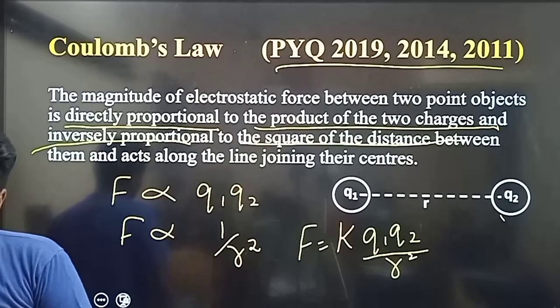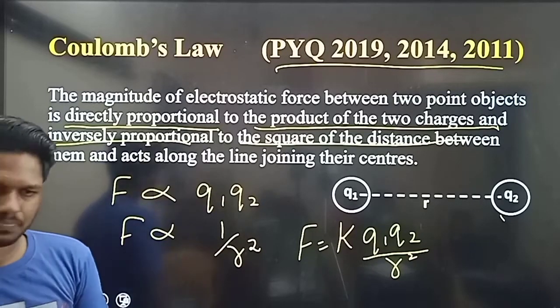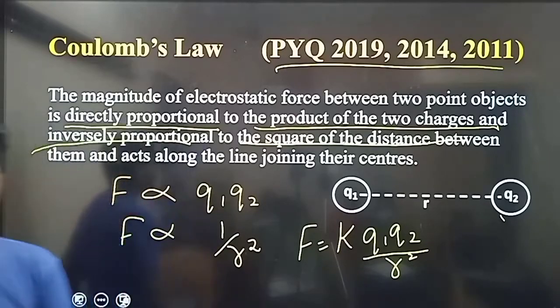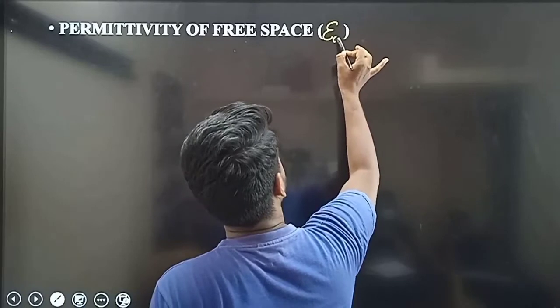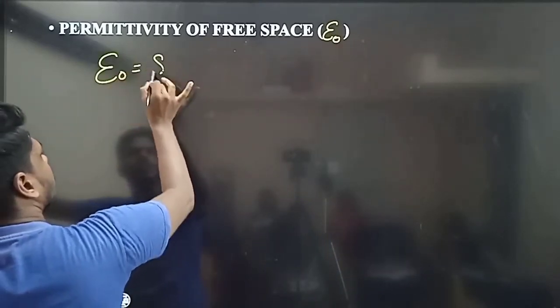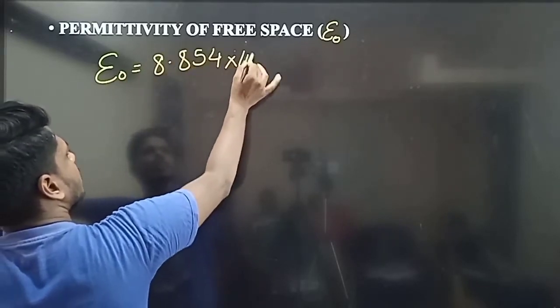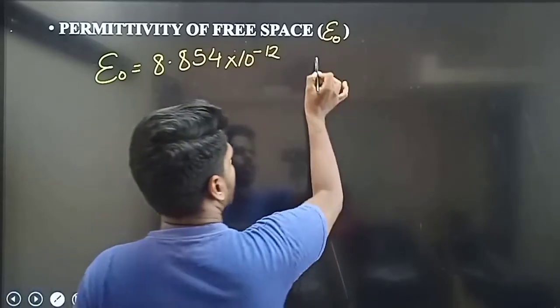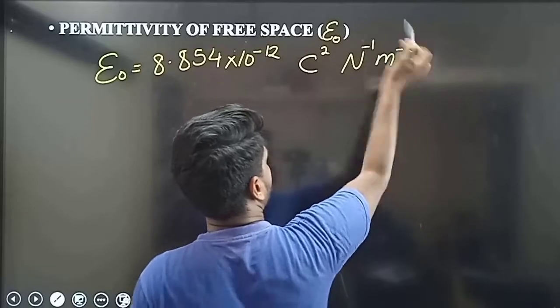Force is directly proportional to the product of the charges and inversely proportional to the distance between them. The permittivity of free space is called epsilon naught, with value 8.854 × 10 power minus 12 coulomb squared newton inverse meter power minus 2.